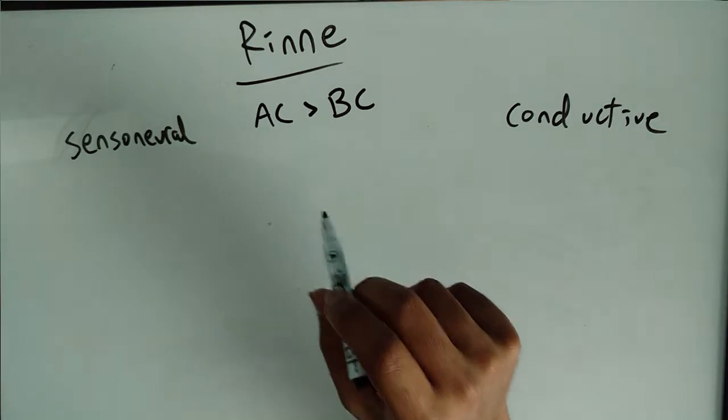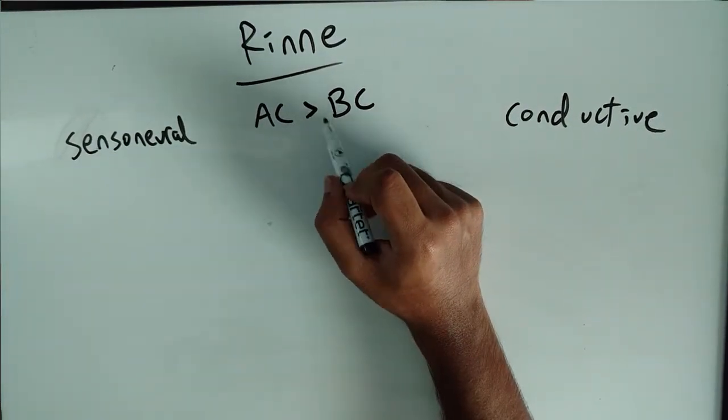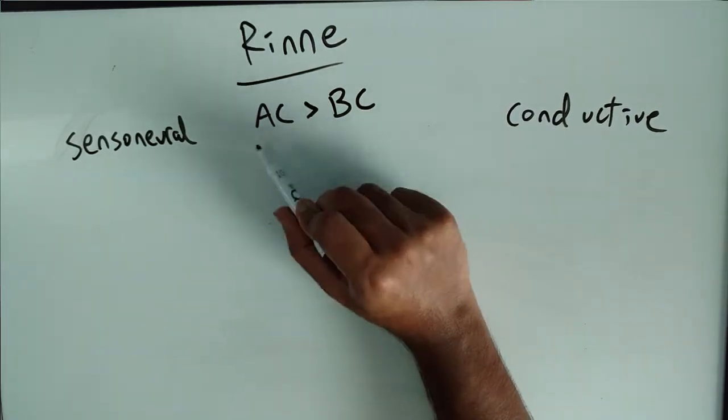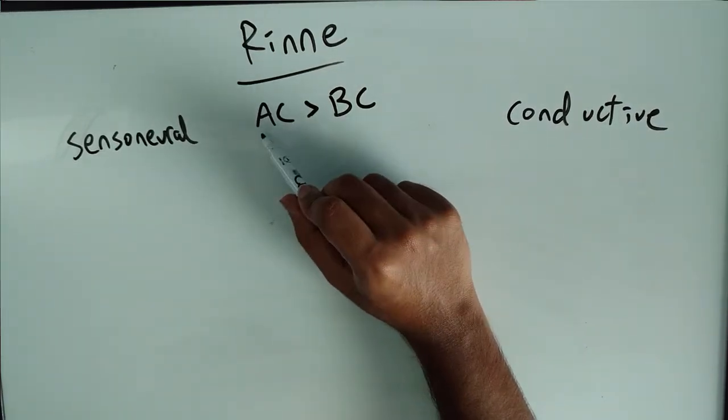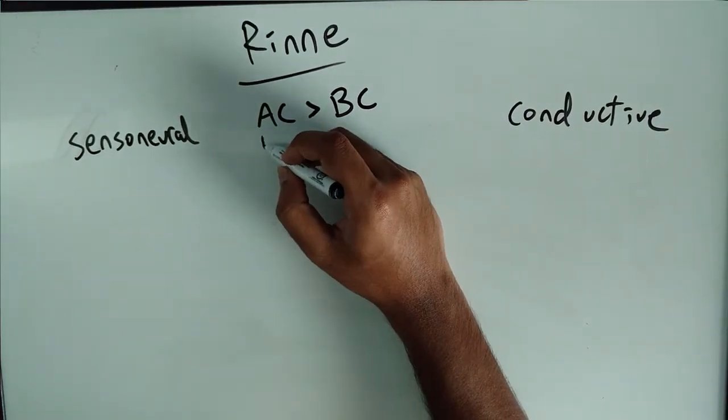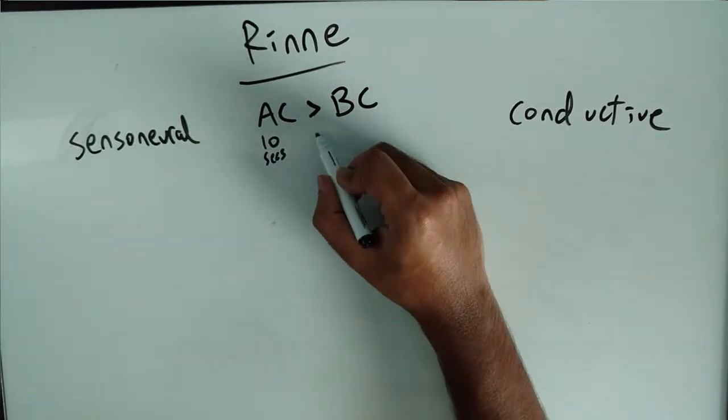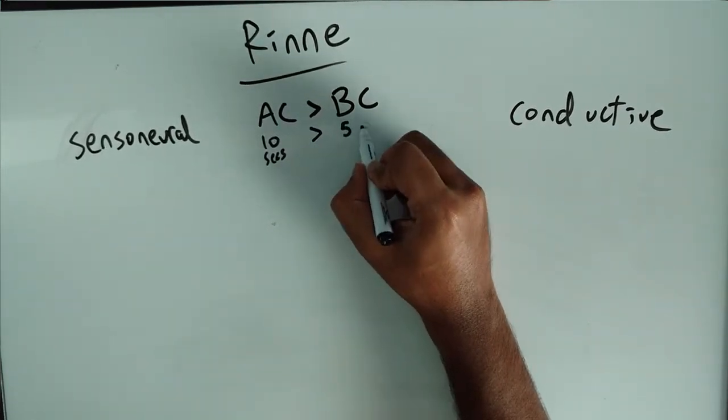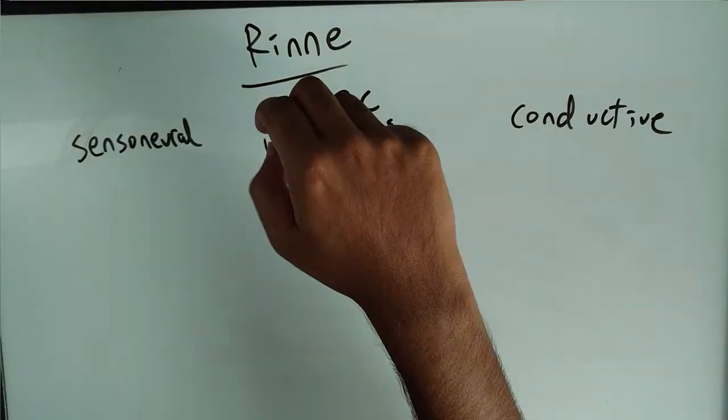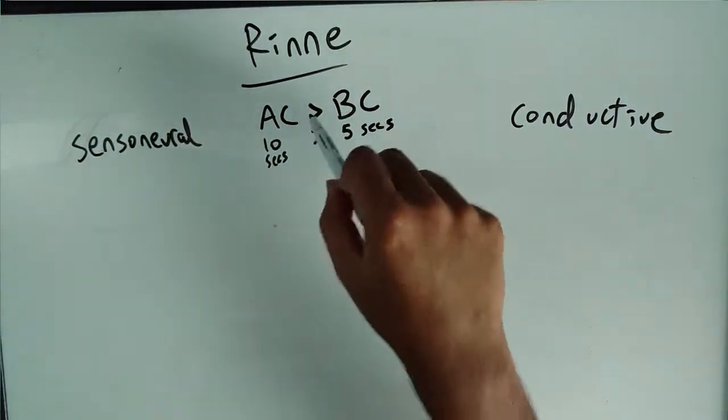So a normal person, you just got to remember this: AC is greater than BC, air conduction greater than bone conduction. Alphabet order, AB, and these are numbers that I made up, 10 seconds greater than 5 seconds. Alphabet order, 10 is greater than 5, and this will make sense later.